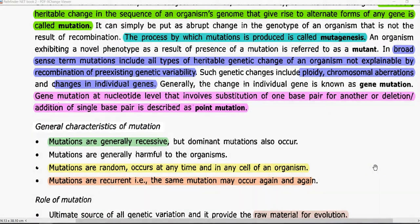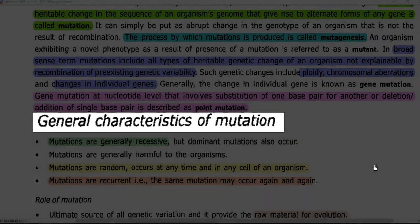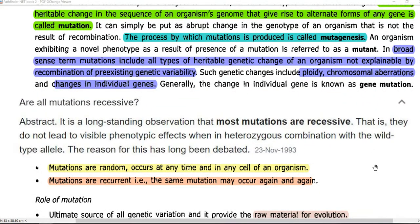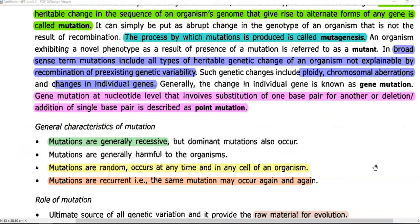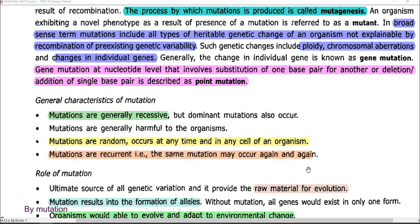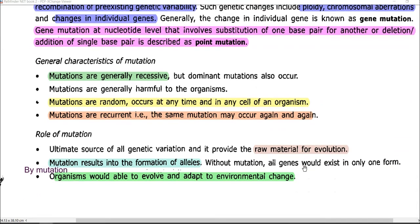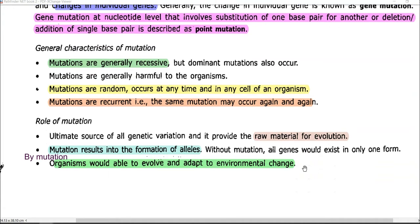Now we look at the general characteristic features of mutation. Mutations are generally recessive, but dominant mutations can also occur in the living organism. Mutations are generally harmful to organisms. Mutations can occur randomly, that is at any time and in any cell of an organism. Usually mutations are recurrent in nature, that is the same mutation can occur again and again in an organism.